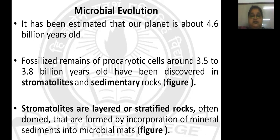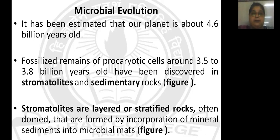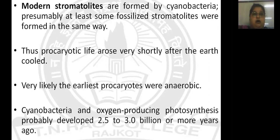Stromatolites are layered or stratified domes, often donut-shaped, and they are formed by incorporation of mineral sediment into the microbial mat. Microorganisms which grow in the form of a mat or filament, when they die and settle with minerals, form a rock called a stromatolite. Modern stromatolites which are found today have cyanobacteria as a microbial mat.